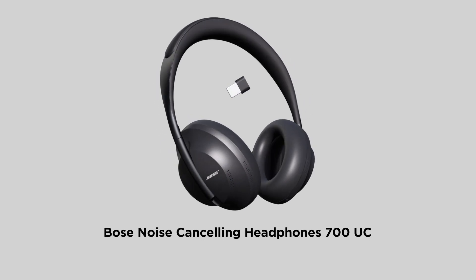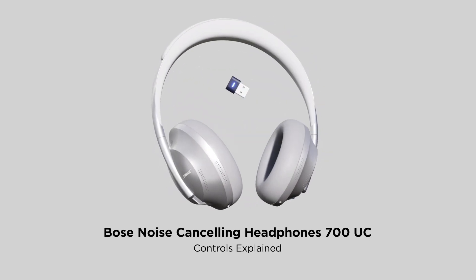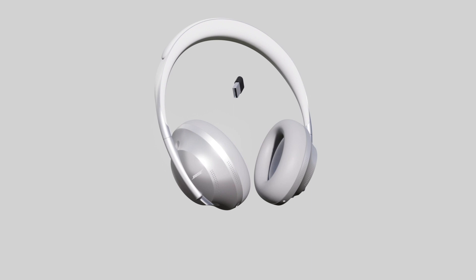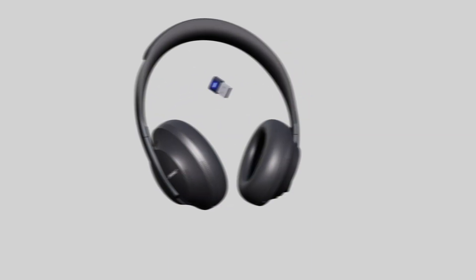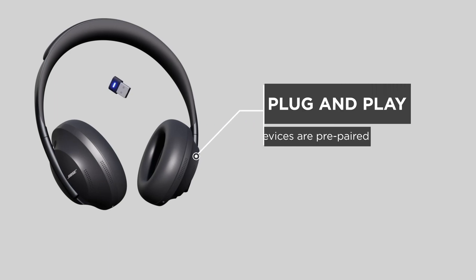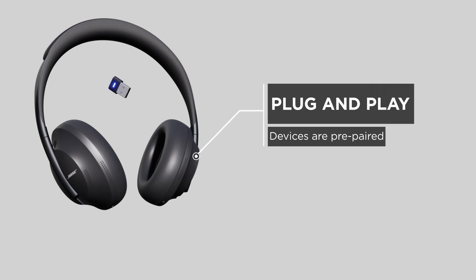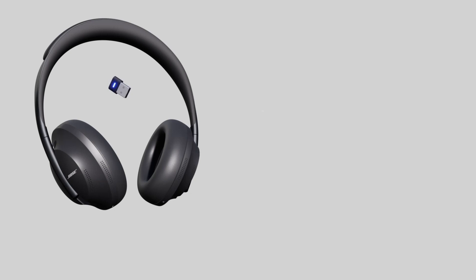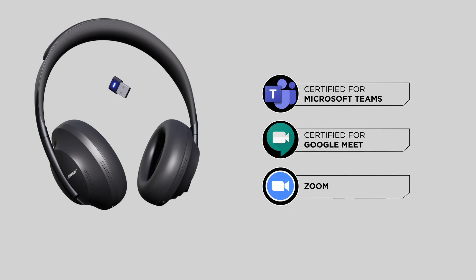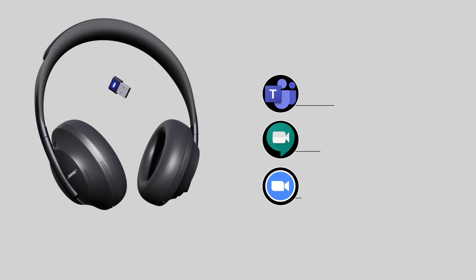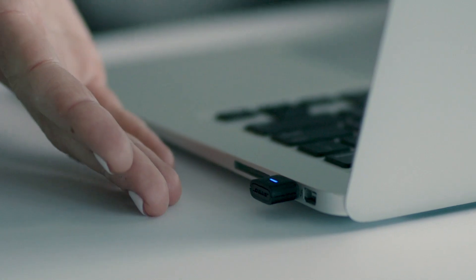In this video, we will look at the capacitive touch and button controls found on the Bose Noise Cancelling Headphones 700UC. Your Bose Noise Cancelling Headphones 700UC come pre-paired with the Bose USB-Link Bluetooth module for plug and play operation. The controls are mapped for UC conferencing use with Microsoft Teams, Google Meet, and other UC client applications. We call this UC mode because this allows you to interact with calls and meetings using the headphones controls when connected to the USB link.